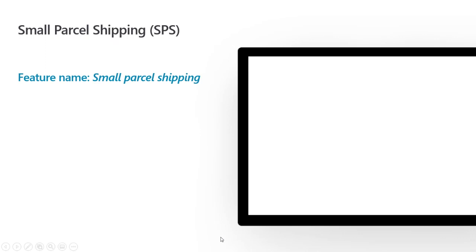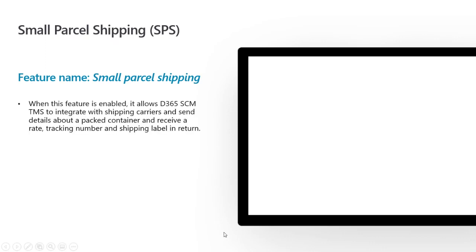Let's go through the technical overview of the actual feature in Dynamics. The feature name when you go to enable this in feature management is 'small parcel shipping.' When you enable it, it allows you to integrate Dynamics with parcel shipping carriers, send them container-level detail, and receive your negotiated rates from that carrier, the tracking number for the parcel, and the carrier label.